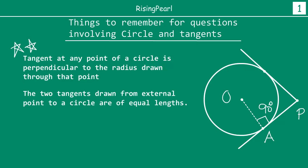The second point to keep in mind is the second theorem, which is very important: the two tangents drawn from an external point to a circle are of equal lengths. In this figure, let PB be another tangent. We have seen from our earlier webisodes that there are only two tangents you can draw from one external point to a circle. Let PA be the first tangent and PB be the second tangent. The second theorem tells us that the lengths of these two tangents must always be equal.